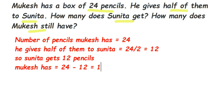Which means Mukesh is having 12 pencils and Sunita is having 12 pencils. In this question, what you have to do is just divide 24 by 2, because they are equally dividing into two parts — he is giving half of them to Sunita. Half means you divide by 2. I hope this question is clear. If you have any other question or doubt, you can drop a comment. Thank you so much for watching.